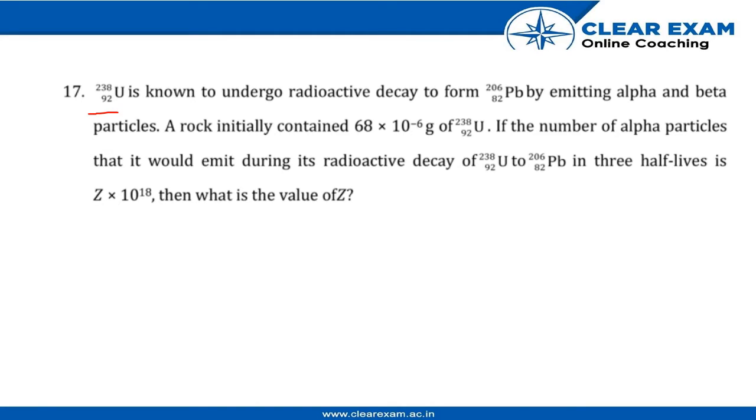Uranium-92-238 is known to undergo radioactive decay to form lead-82-206 by emitting alpha and beta particles. A rock initially contained 68 × 10⁻⁶ grams of this uranium.